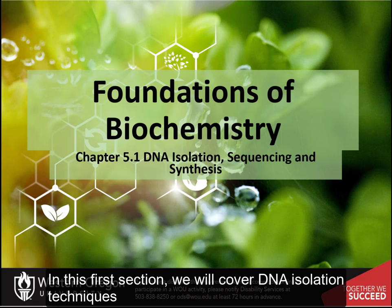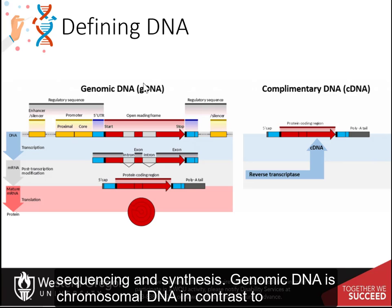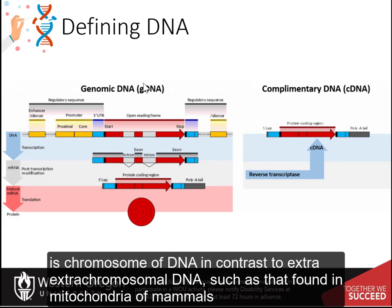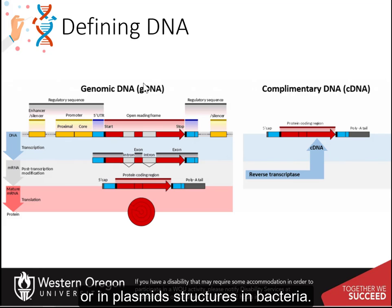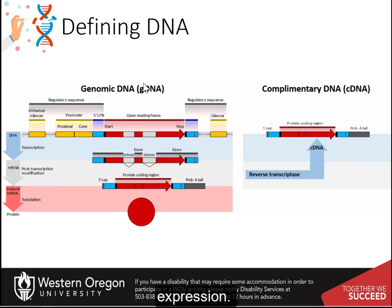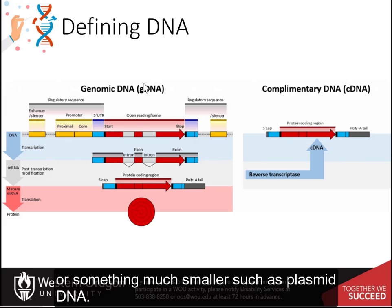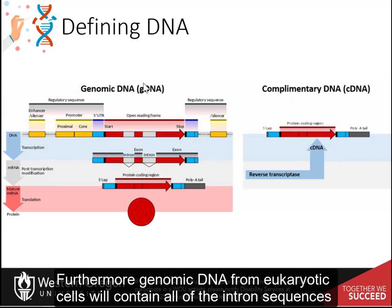In this first section, we will cover DNA isolation techniques, sequencing, and synthesis. Genomic DNA is chromosomal DNA, in contrast to extra-chromosomal DNA such as that found in mitochondria of mammals or in plasmid structures in bacteria. The techniques used to isolate DNA are different if you are planning to isolate genomic DNA or something much smaller such as plasmid DNA. Furthermore, genomic DNA from eukaryotic cells will contain all of the intron sequences within it.